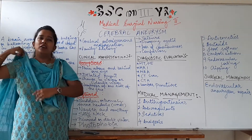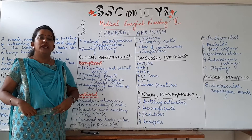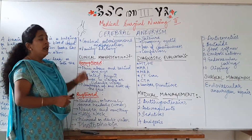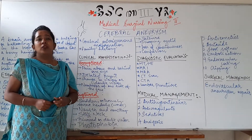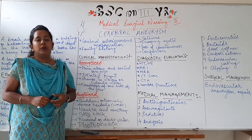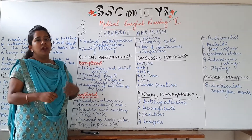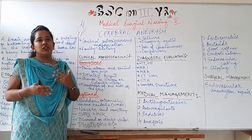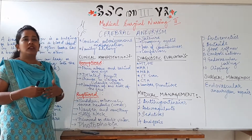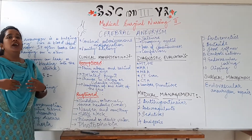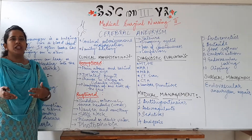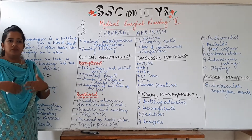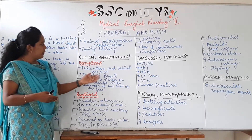So these were some conditions which can lead to brain aneurysm. Next, when we see the symptoms of people with brain aneurysm, we have divided them into two: one is the unruptured condition and the other is the ruptured condition. The leaking condition will be dealt with alongside.